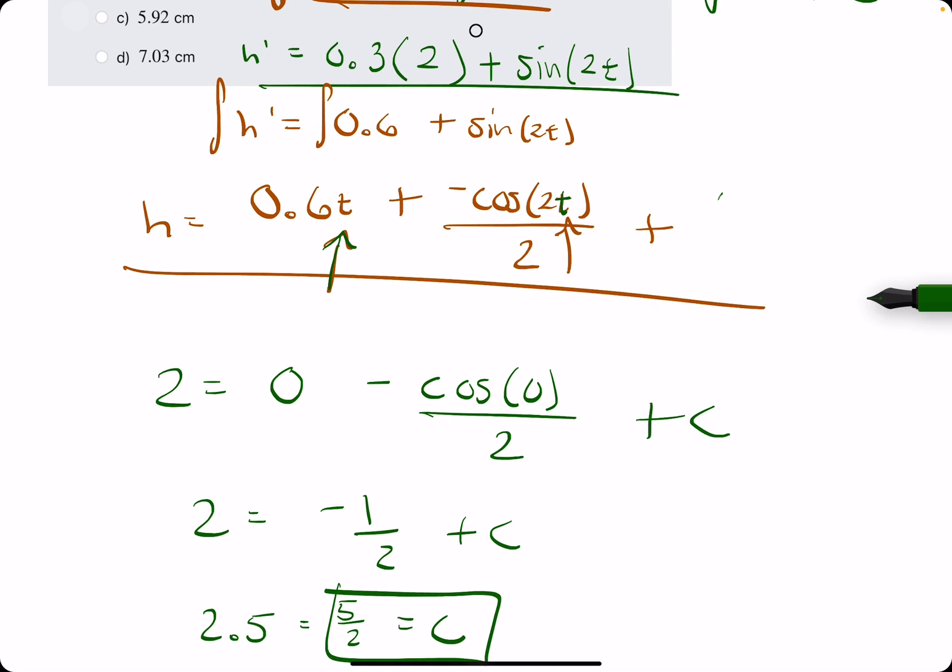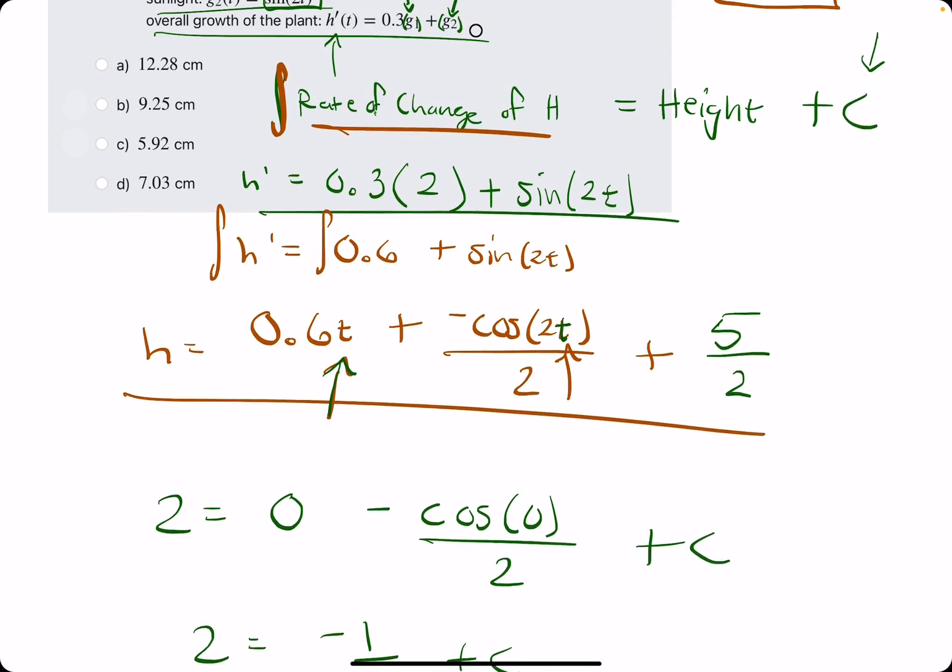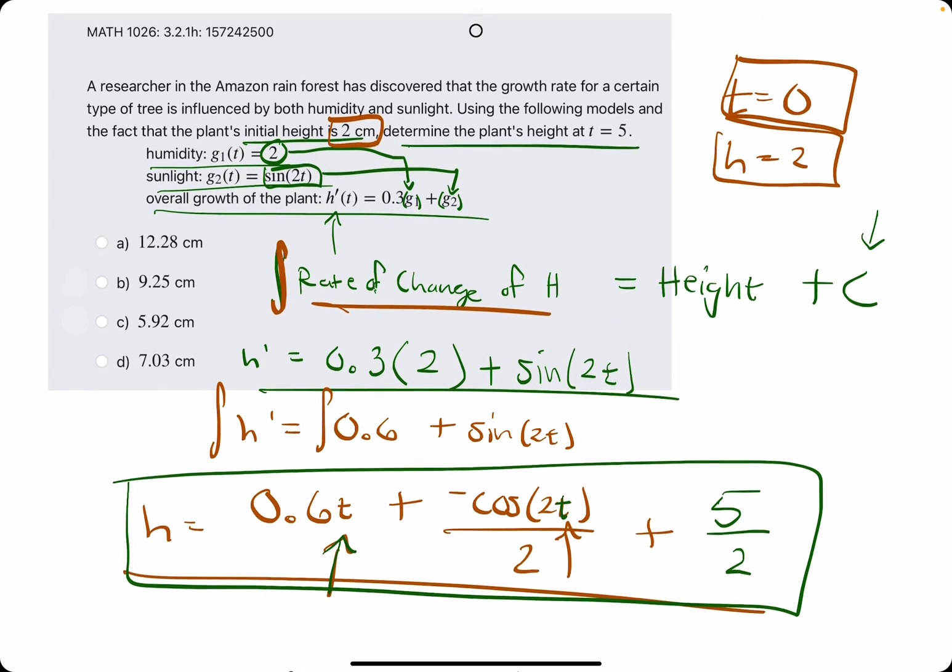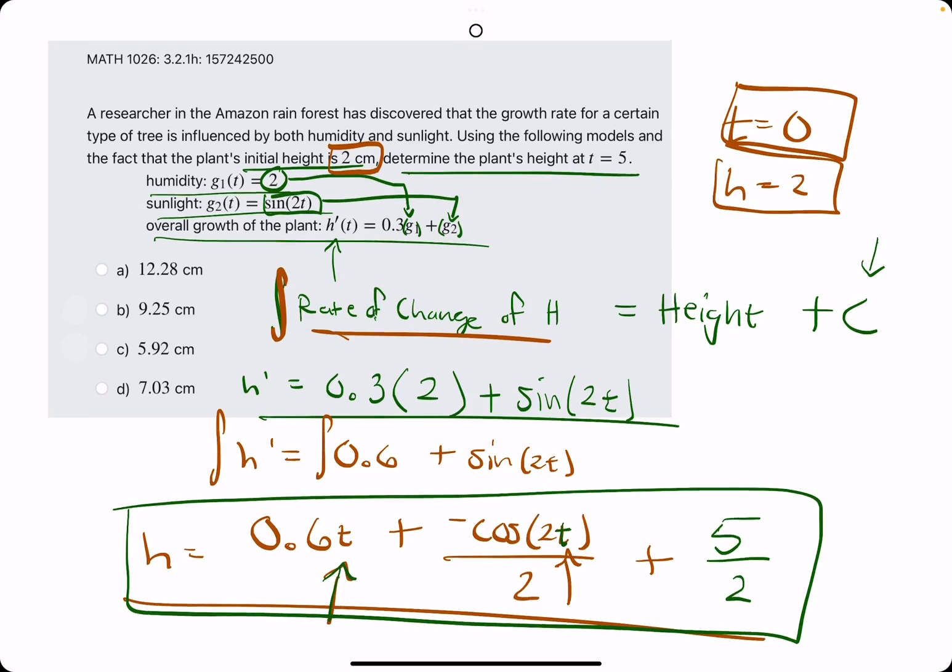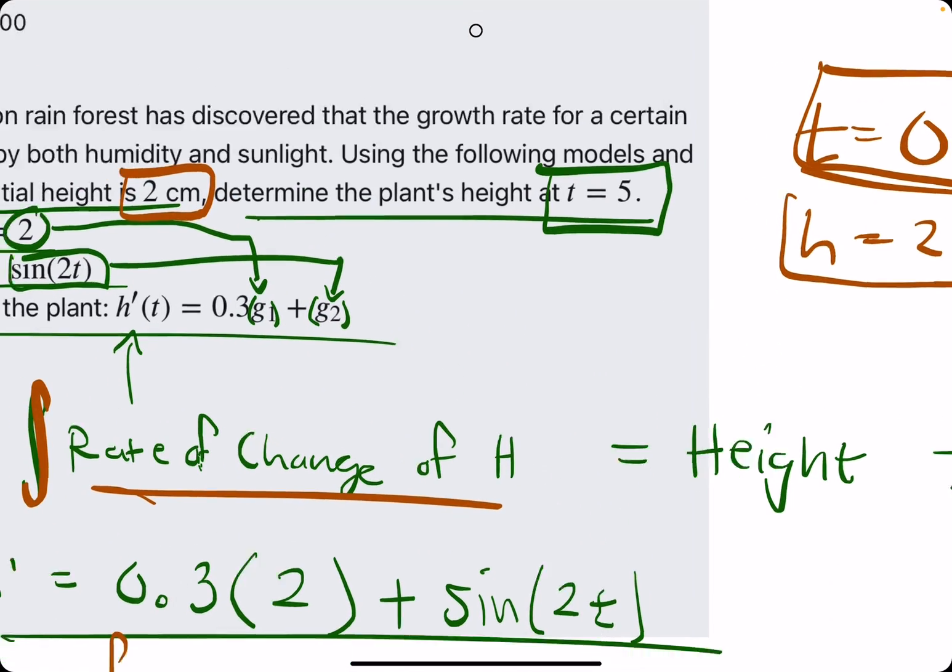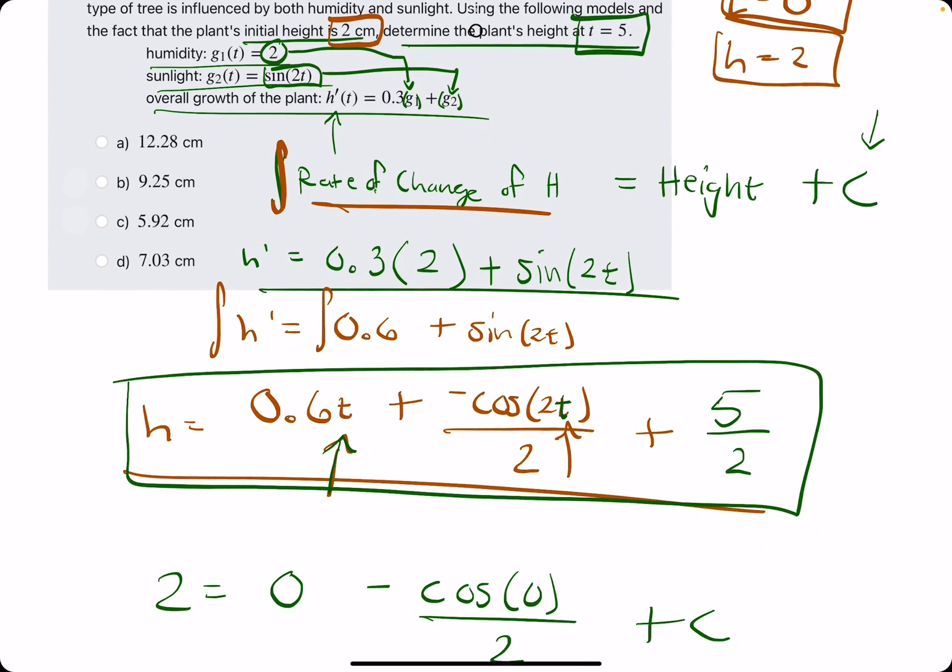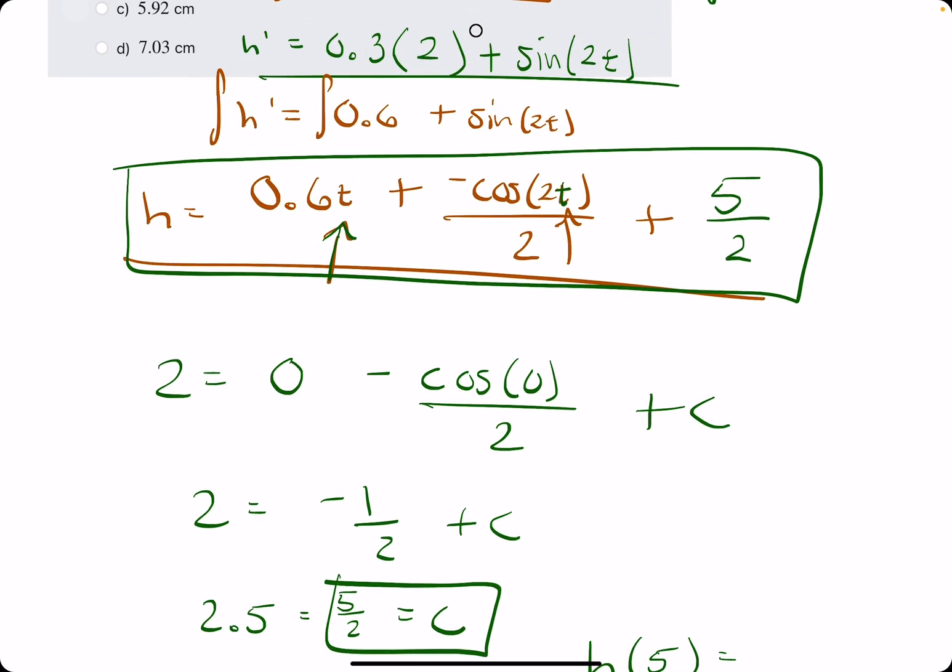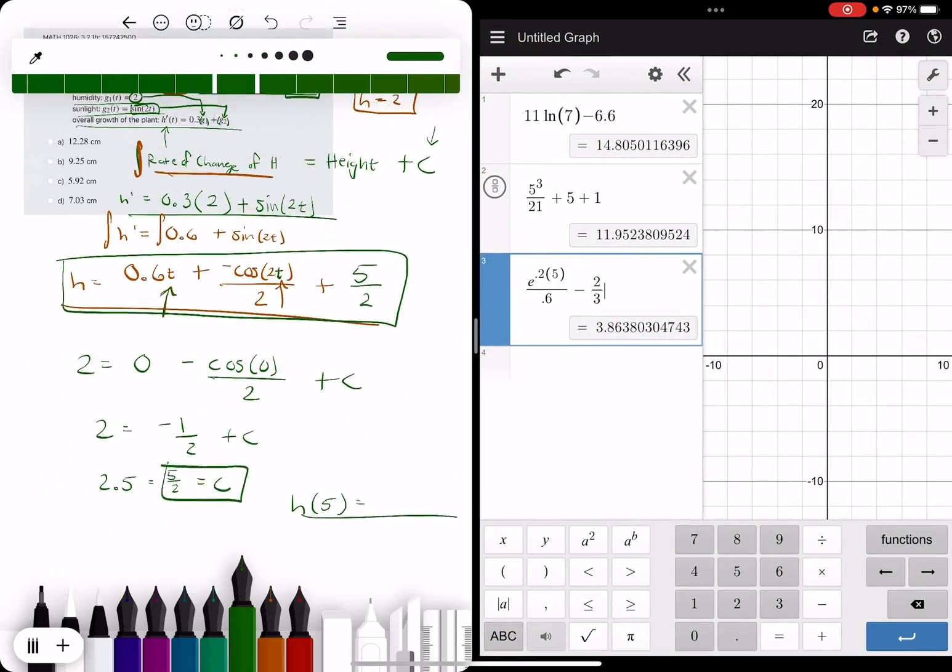We have our C value as positive 5 over 2. Now we have our complete height function in terms of t. So now, to determine the plant's height at 5, we just plug in 5 wherever we see t. So h of 5 equals something. Let's open up Desmos to talk through this calculation.